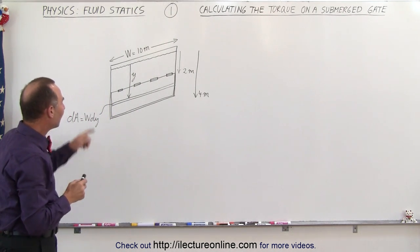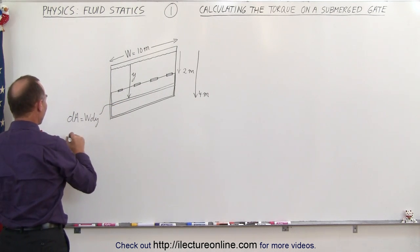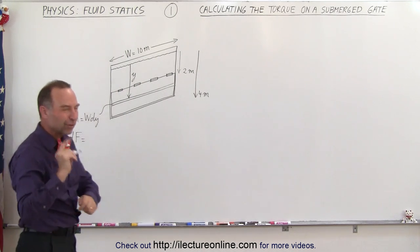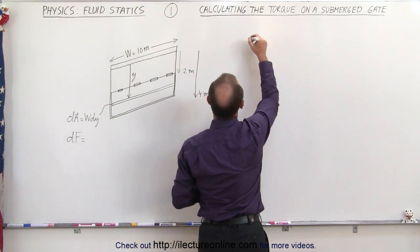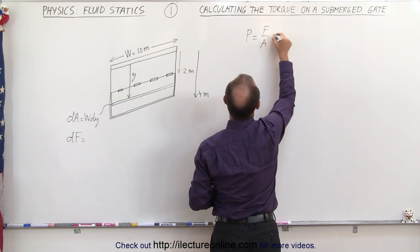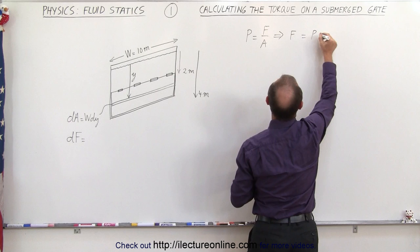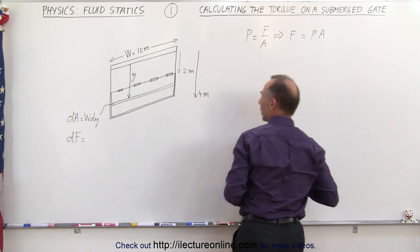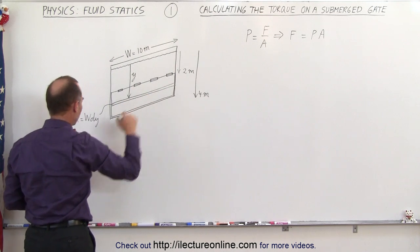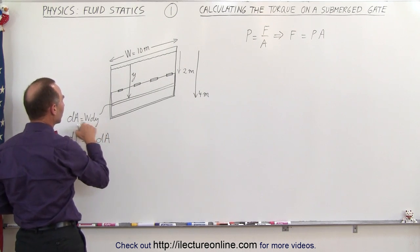So what is the force acting on that small area element? We know that pressure by definition is equal to force divided by area, which means that the force on any area underneath the water is going to be equal to the pressure times the area. So we can say that dF, the small amount of force on that strip, is going to be equal to the pressure at that depth times the area dA, which is equal to W·dY.